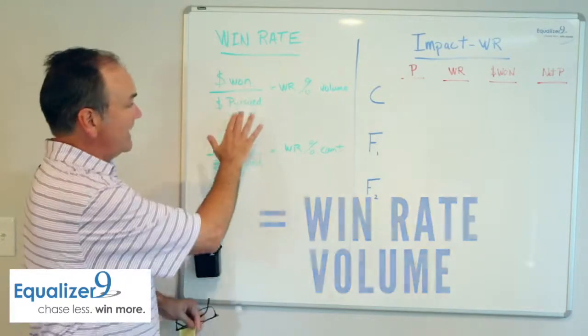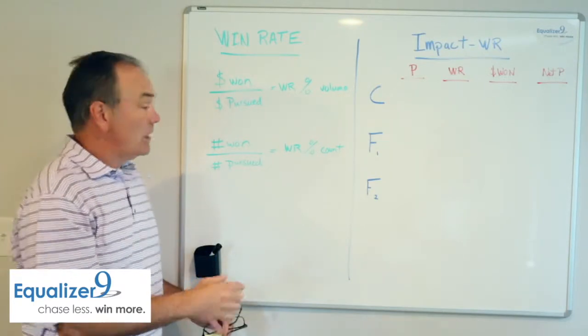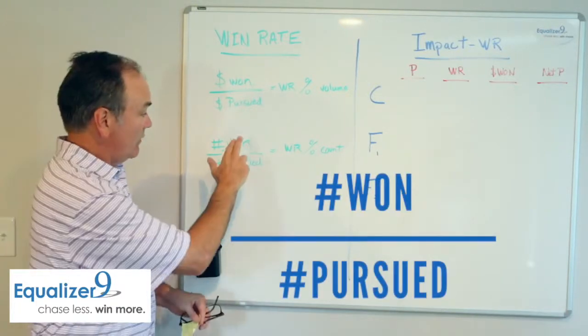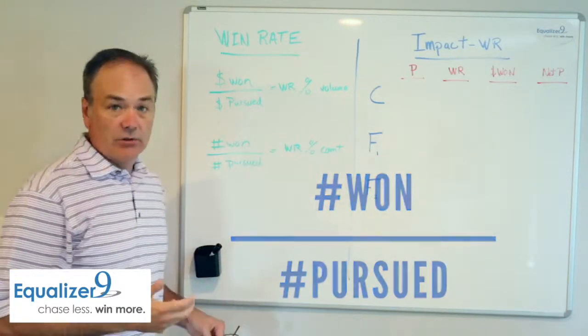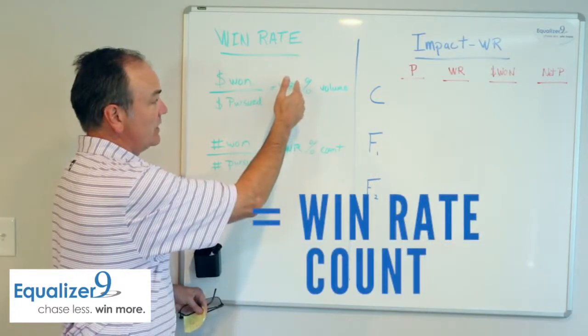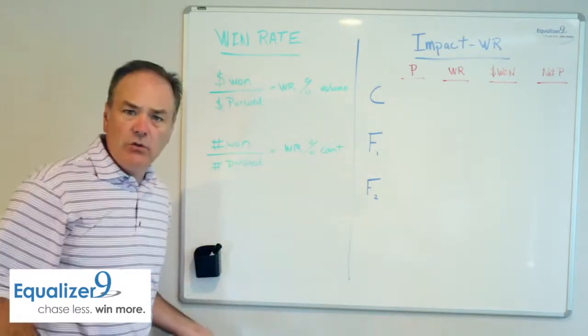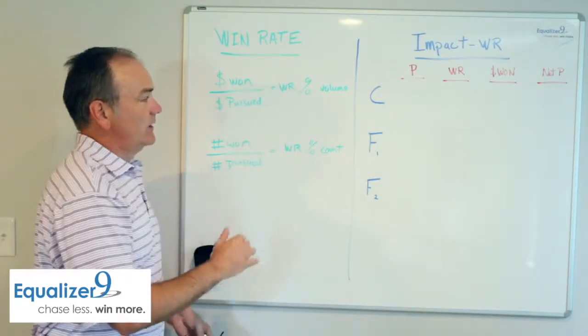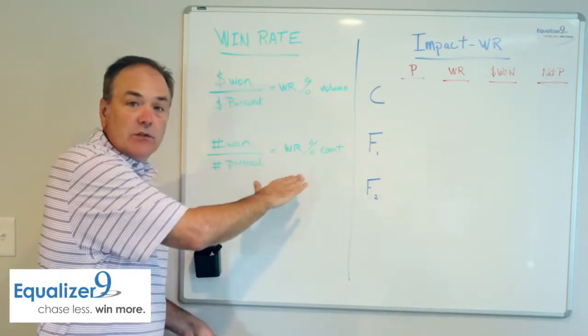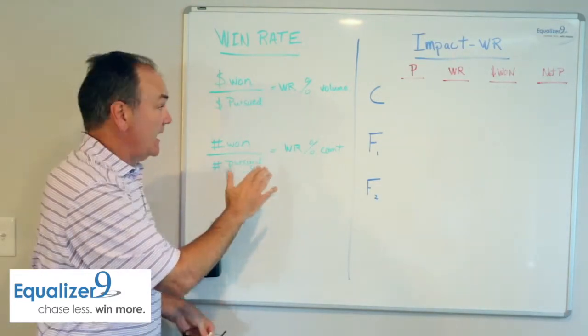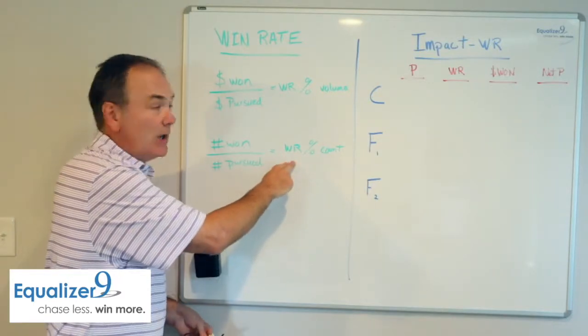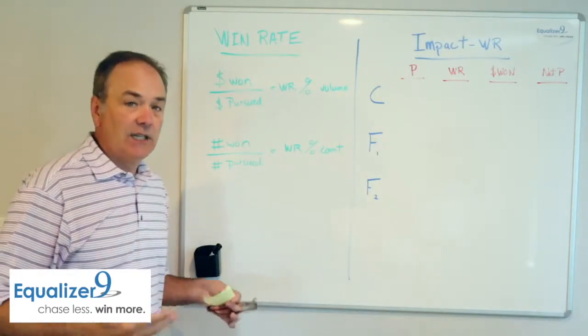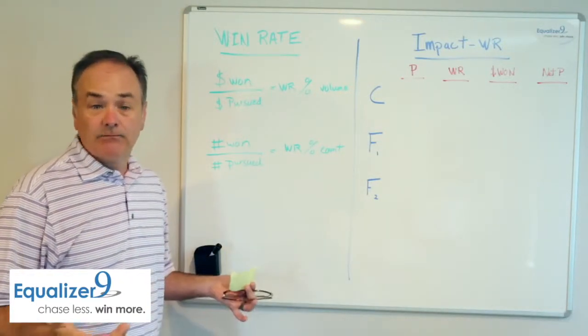If we come down here and that same 100 million we pursued was represented by 15 projects, and the same 50 million that we won was represented by five projects, that would be five over 15. That would be a 33% win rate on count, 50% on volume, 33% on count. And why do we do the calculation in both ways? Because it will tell a story for us. If this number is higher than this number, it tells us we're doing a very good job winning the big jobs and we're not doing such a good job pursuing the small jobs. If it were the other way around and it was a high percent on count and a very low percent on volume, it tells us we're not winning the big ones. So, it gives us an indication of where we need to focus our attention and time to get better.